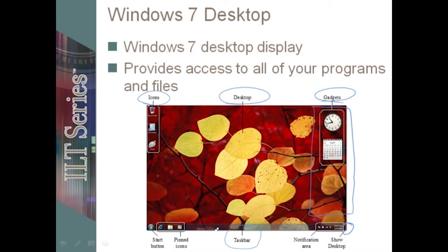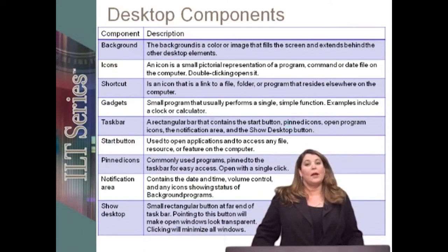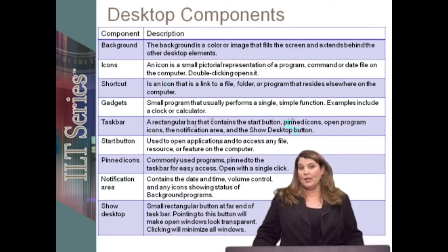The notification area looks very similar, but when you go into the menus you might see a little bit of differences. And of course we have start and pinned icons in the same location. To name what some of these components are, let's just go through them. The background is the background colors and graphics that you choose that display on the desktop. Icons are the pictures that represent the programs or documents that you'll be going into.